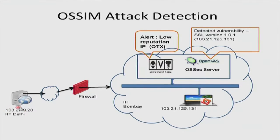This means that this particular IP address has already been involved in such attacks elsewhere and is known for its attacks. A first alert will be created by SIEM saying this IP can possibly make an attack. After that, OpenVAS has already alerted that there is a vulnerability in our system — we have installed an older version of OpenSSL vulnerable to Heartbleed. When the attack happens on the server, we have an OSSEC agent installed. This OSSEC agent sends logs to the OSSEC server, which is a part of OSSIM, and OSSIM will report that this attack is happening. In this way you can detect an attack in real time and take necessary steps.